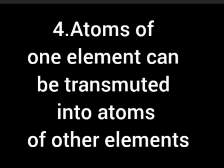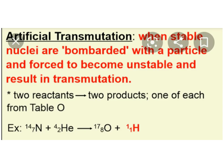The fourth postulate: atoms of one element can be transmitted into atoms of other elements. Yes, we can change one element into another. This process is called artificial transmutation. Artificial transmutation is nothing but bombarding an atom with alpha, beta, or gamma particles. Atoms of one element can be transmitted to atoms of other elements by bombarding with either alpha, beta, or gamma particles.